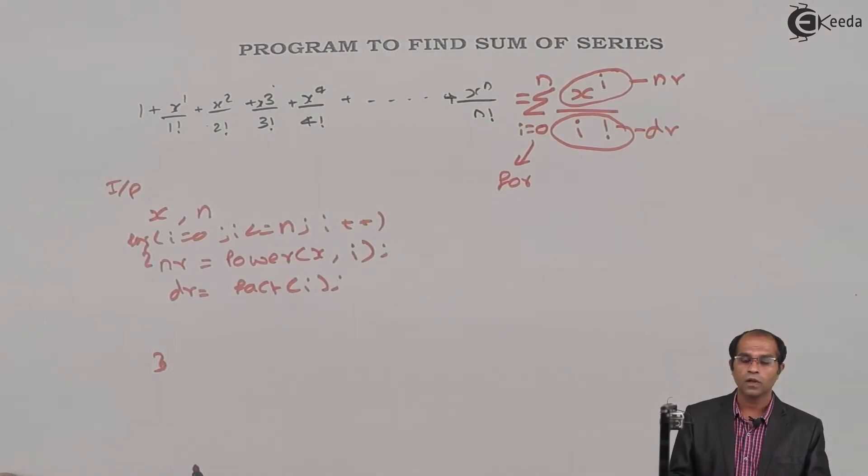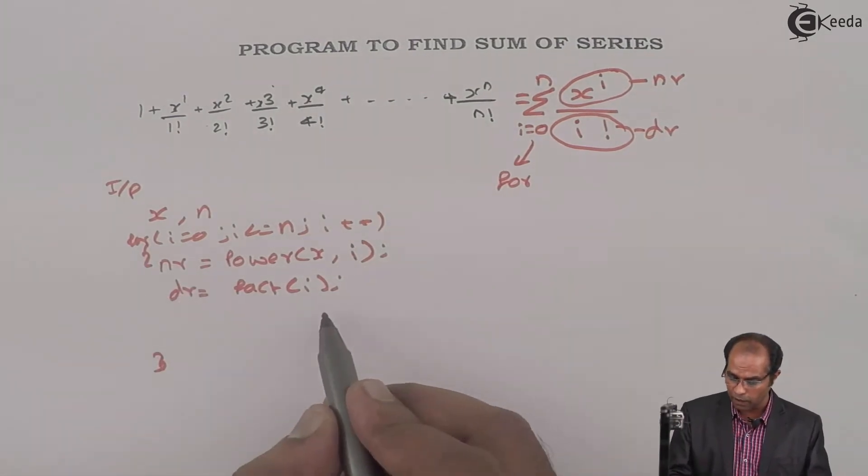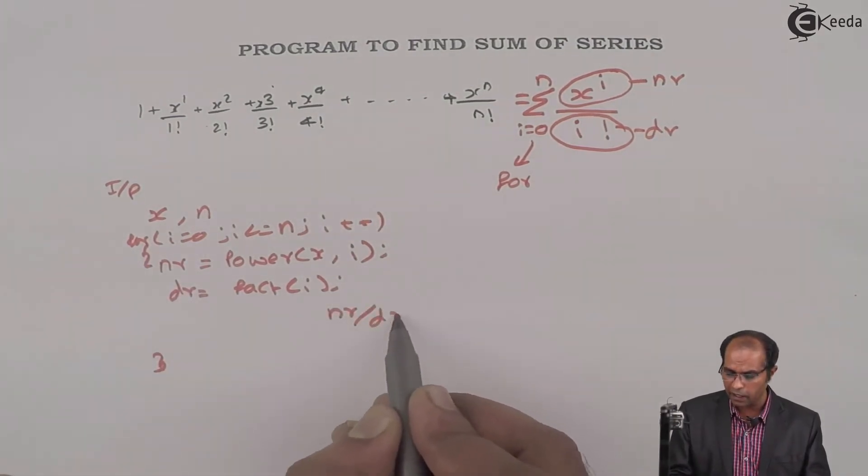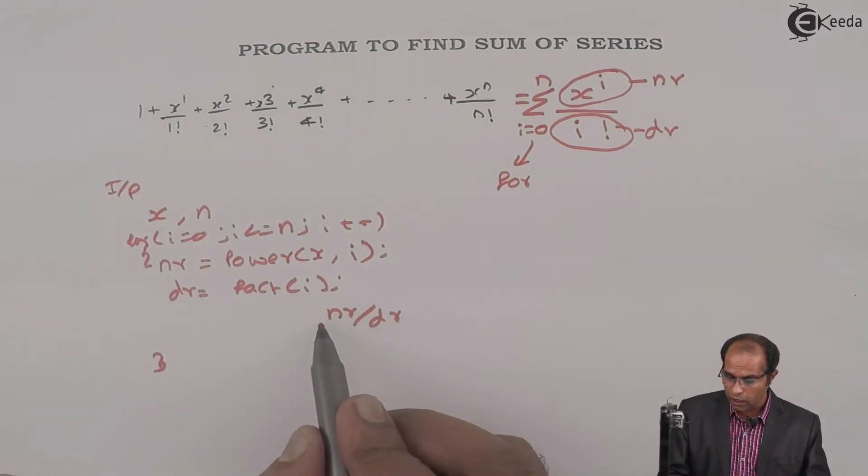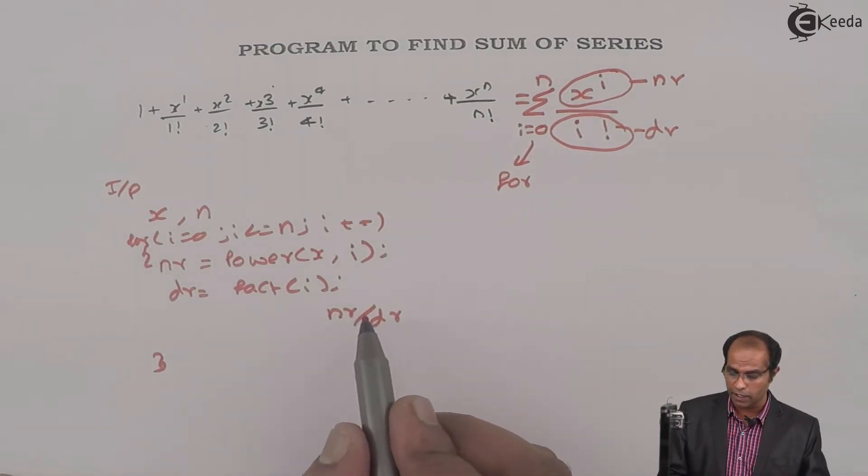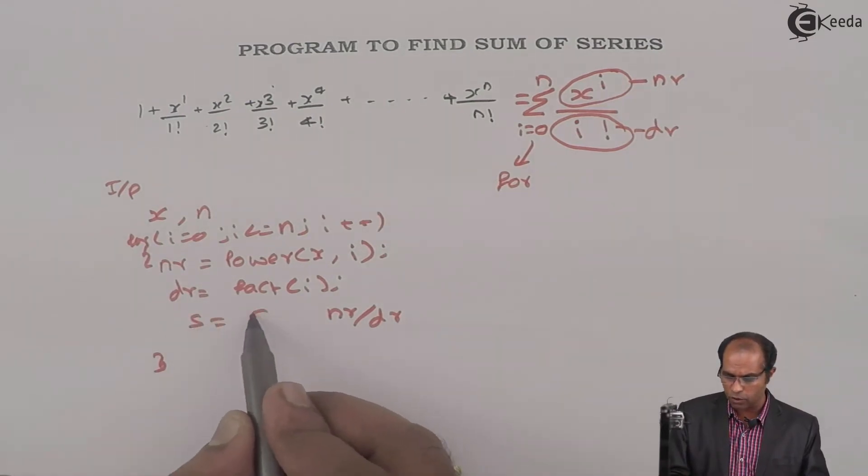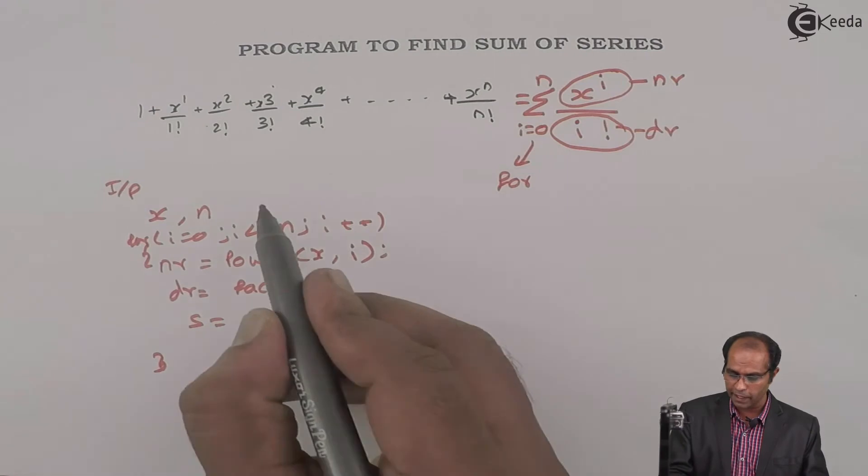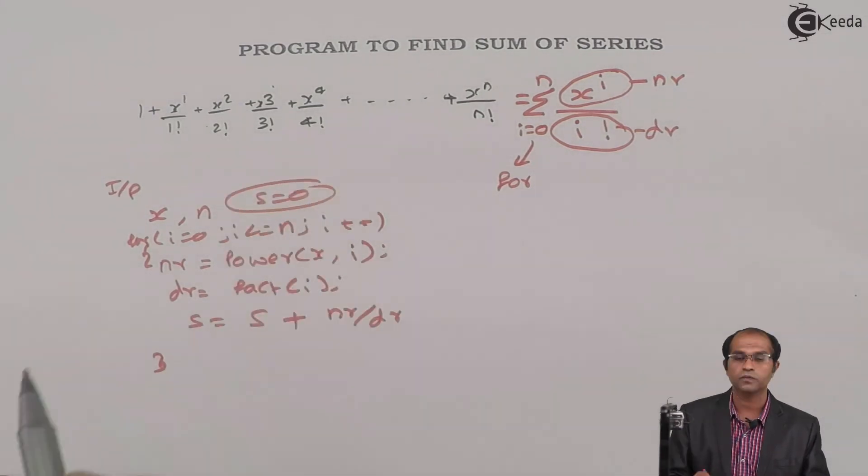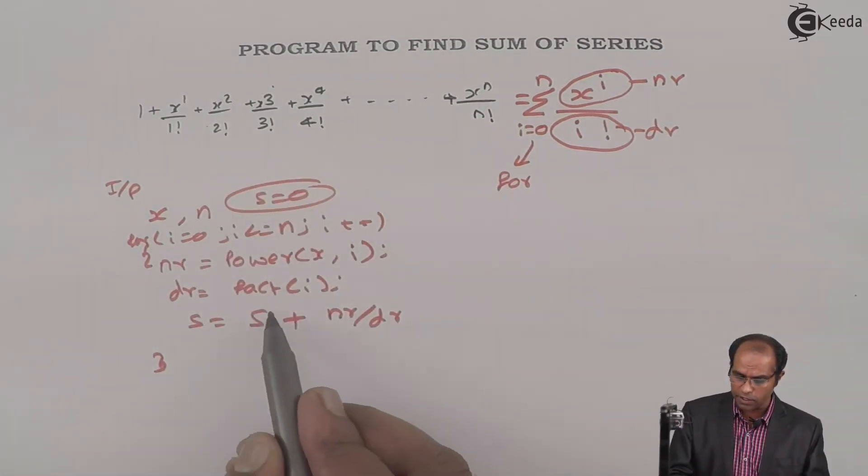With the values of nr and dr given, divide this nr by dr, and then you don't just do the division operation—it has to be added simultaneously. So I'll say s equals to s plus, by setting s as initial 0.